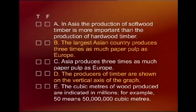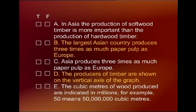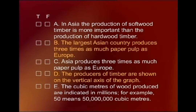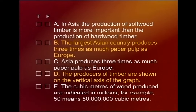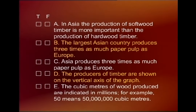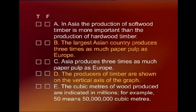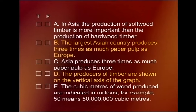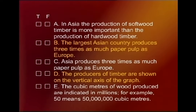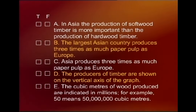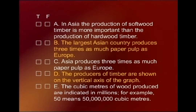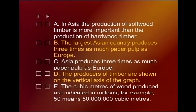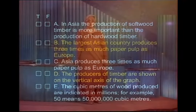Number D: 'The producers of timber are shown on the vertical axis of the graph.' True. 'The cubic meters of wood produced are indicated in millions — for example, 50 means 50 million cubic meters.' That is also a true statement.